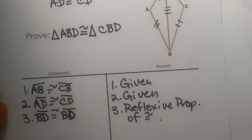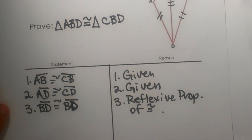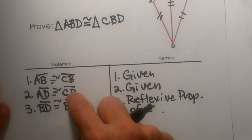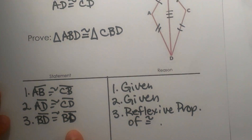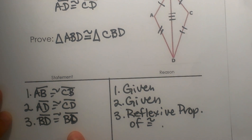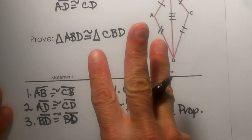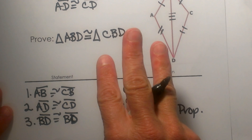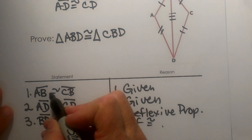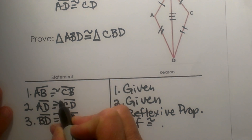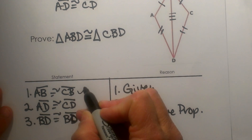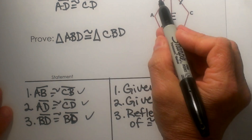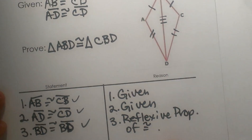Now do we have enough statements to say the triangles are congruent? Well, for proving triangles congruent you need three congruent statements. We have one here, we have congruent here, and we have all three. And what do you notice about those? They are all three sides — side, side, side.